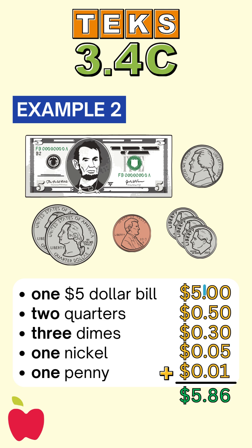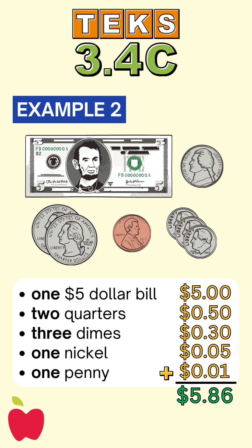Remember to line up your decimals when you add it up. This helps you stay organized and make sure you get the right amount. You have $5.86, which is exactly enough to buy the toy.